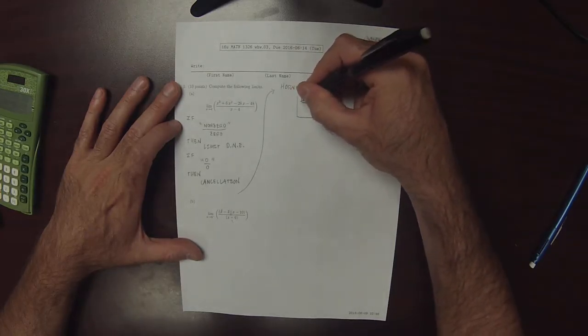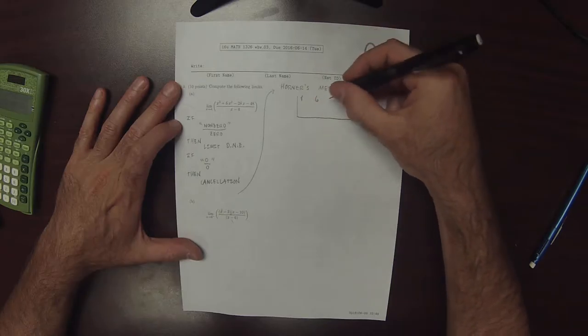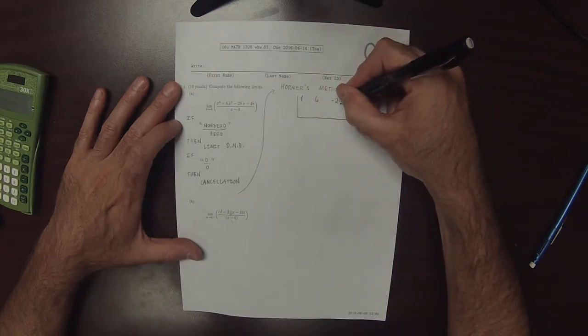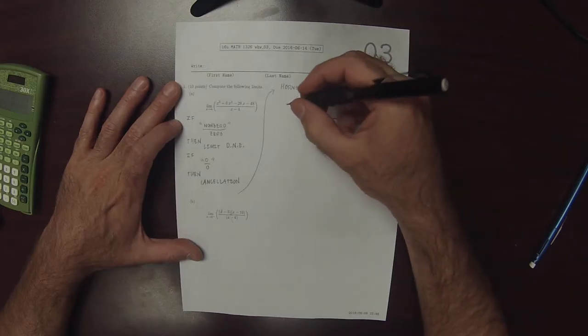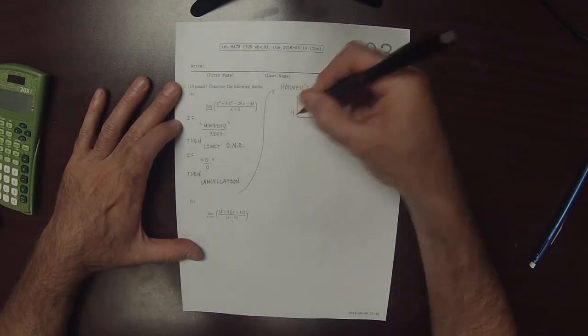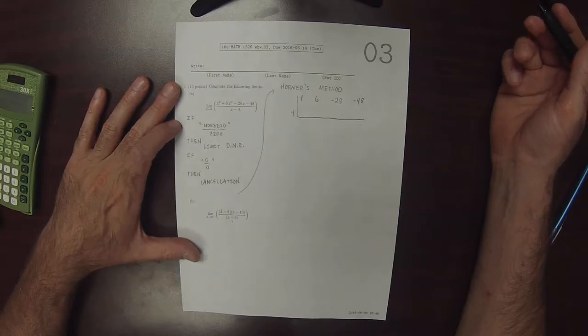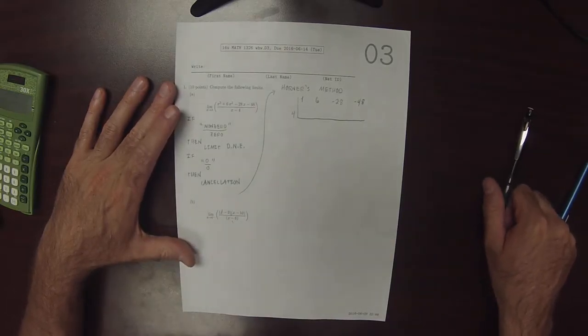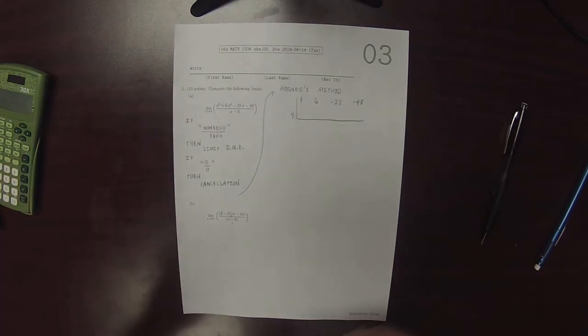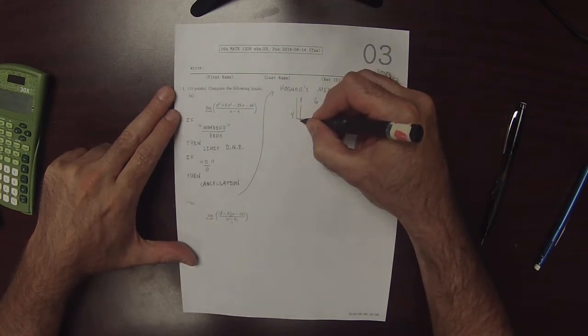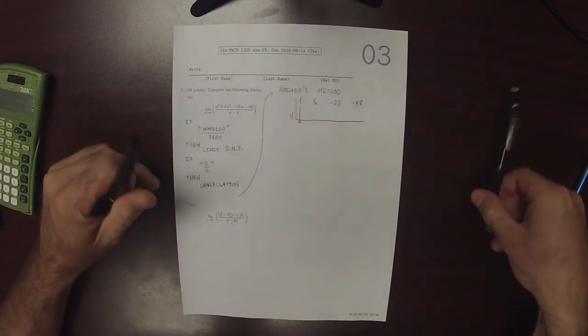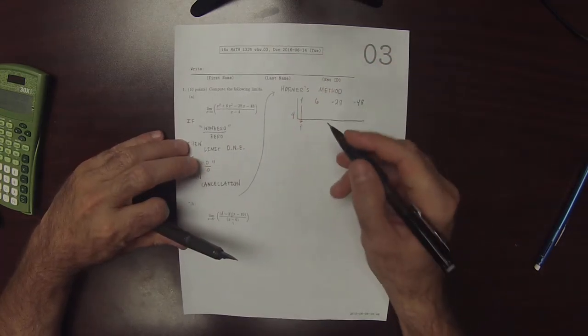So we're writing the coefficients: 1, 6, negative 28, negative 48. And then we want to evaluate at 4. So the way Horner's method works is that the leading coefficient always drops straight down.